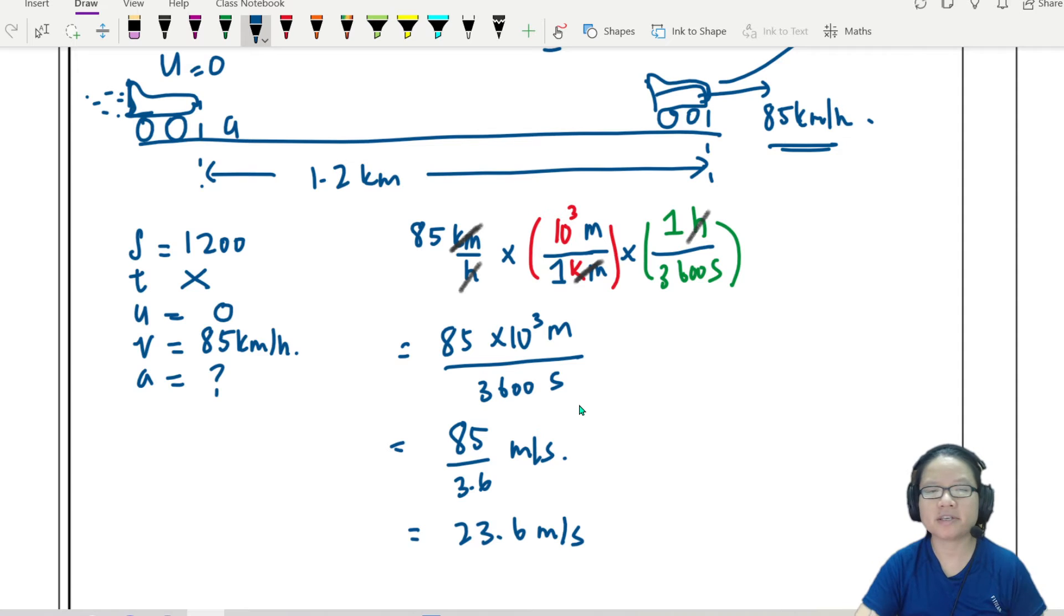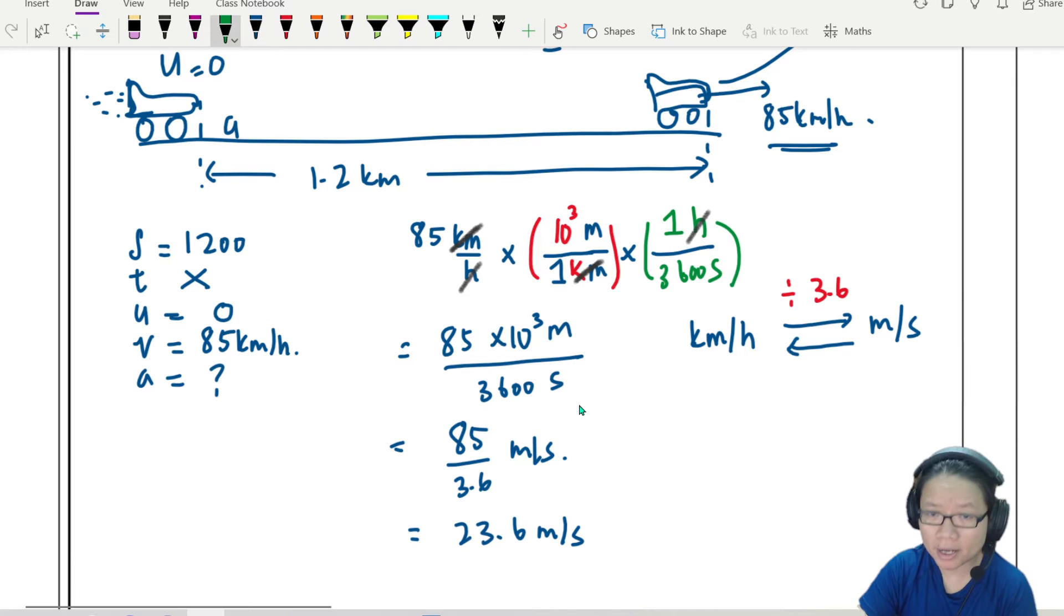Cause 10 to the power of 3 divided by 3600 is 1 over 3.6. What is this? Let's press calculator. 85 divided by 3.6. This is 23.6 meter per second. So there's kind of like a shortcut here. If you want to convert from km per hour to meter per second, you will divide by 3.6. If you convert back, you multiply by 3.6. But this is how I got 3.6 in the first place. So it's either you know this or you just start from scratch. I don't remember. I don't memorize. I do this.